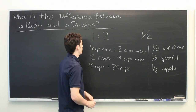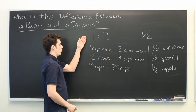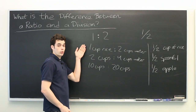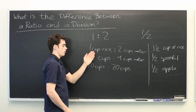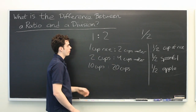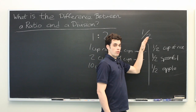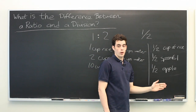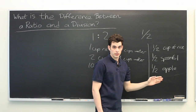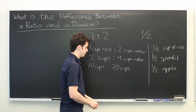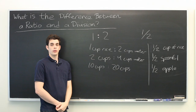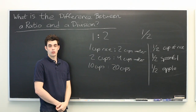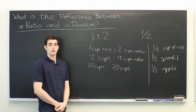So again, a ratio represents a relationship between two quantities that may change, and division represents a single quantity that is fixed. This is Ryan Malloy, and we've just discussed the difference between a ratio and a division.